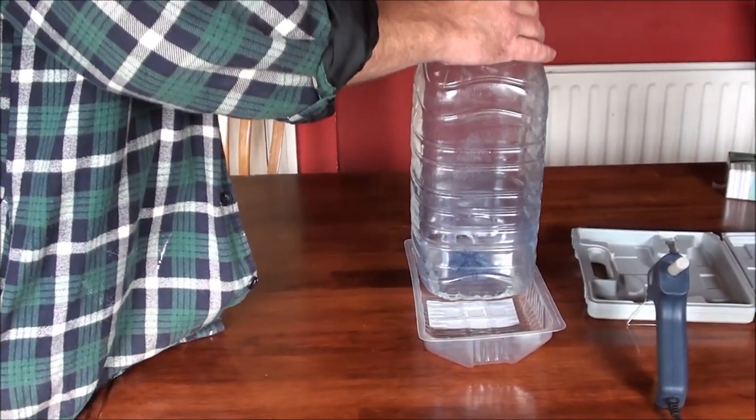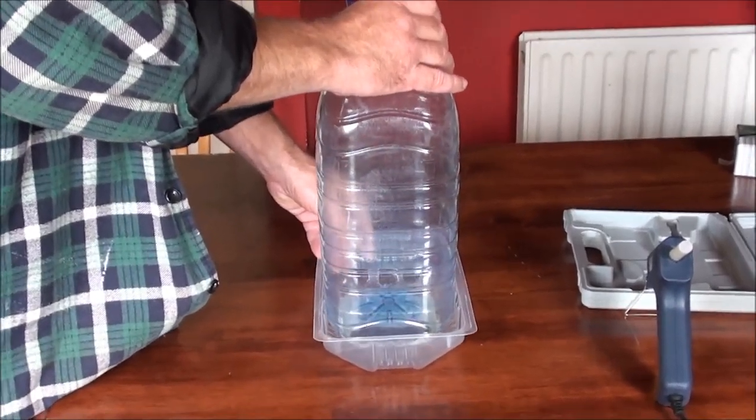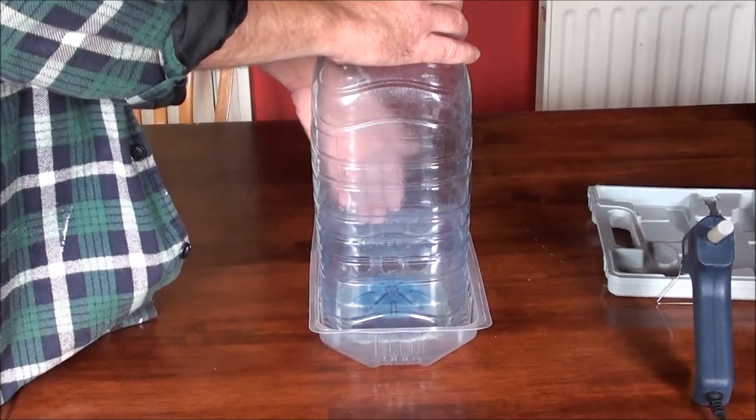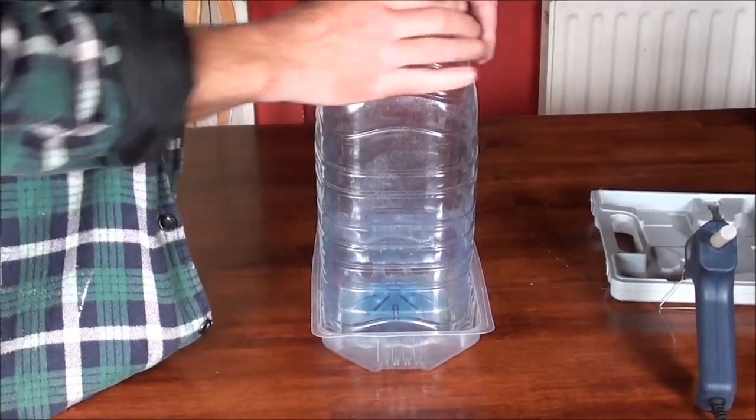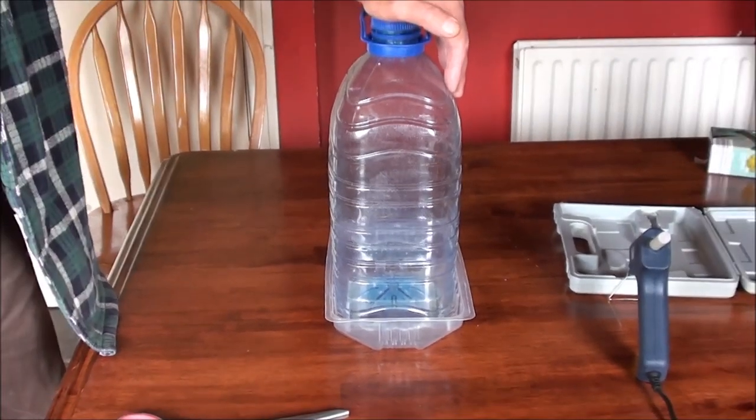Now place this in the middle of the meat container. Hold it down for a minute or two while the glue goes off.